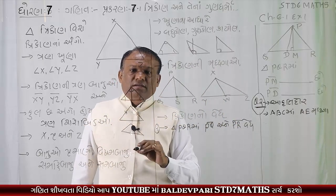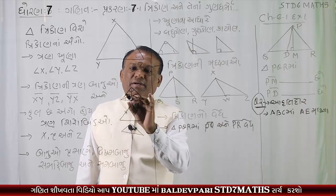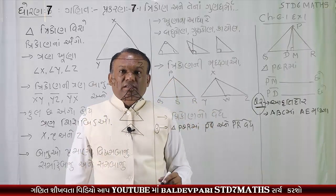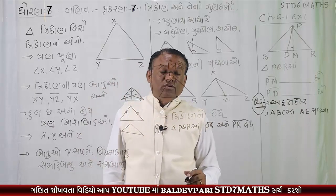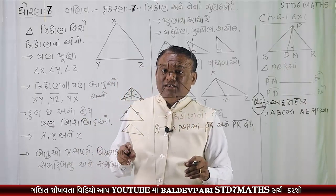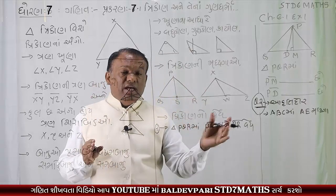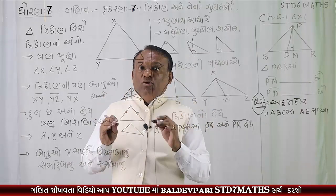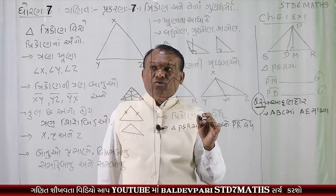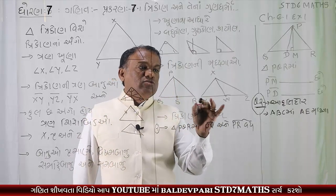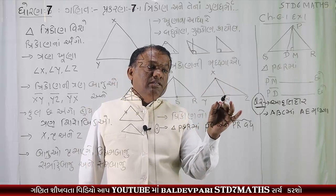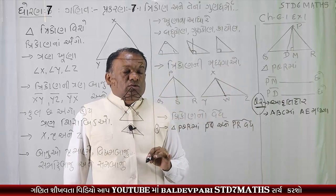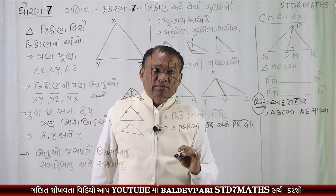વચ્ચે જ્યાં દોર સો ત્યાં એની મધ્યયગા અને વેધ બને છે. સમ બાજુ ત્રિકોણ હોય ત્યારે મધ્યયગા અને વેધ - તમે ચેપ્ટર માં જઈ ને જોઈ શકો - એક જ આવે છે.